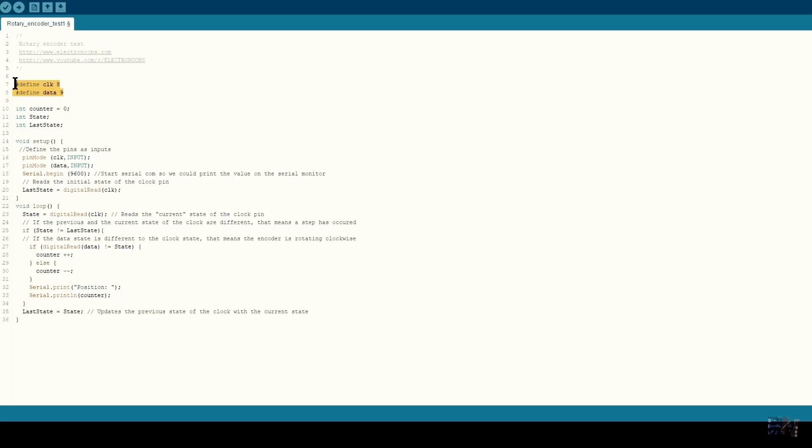First, we define the pins that we are using, which are pins 8 and 9 from the Arduino. We start the serial communication because I want to print the steps on the serial monitor. So the code is more than easy. We read the state of the clock pin. If the detected state is not the same as the last state, we had a change. But if the state is the same, we don't do nothing. So now we check the state of the data pin. If it's different than the clock pin, then we are rotating to the right. And if it's the same, we are rotating to the left, increasing or decreasing the counter value. Finally, we print the values on the serial monitor.